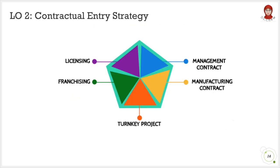Now, we will be exploring the types of entry strategy under the contractual category. The essential of a contractual agreement emphasizes the exchange of intellectual property between two or more parties. There are five types of strategy under the contractual entry category, which are licensing, franchising, management contract, manufacturing contract, and turnkey project.